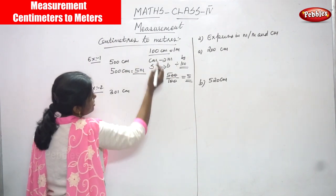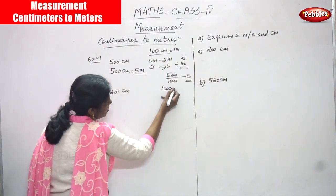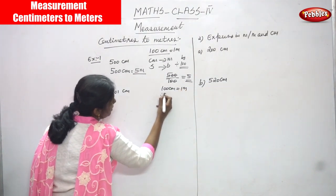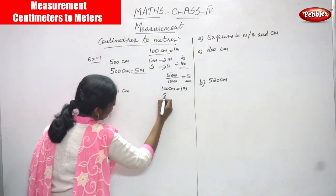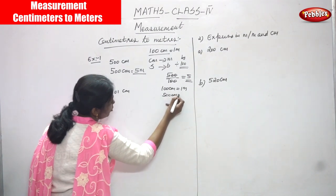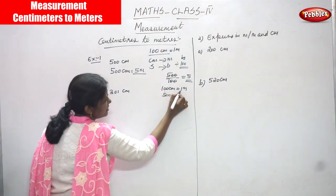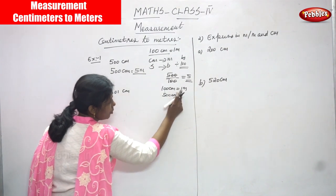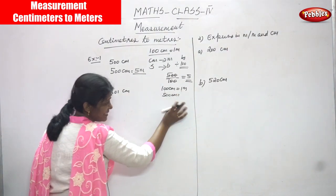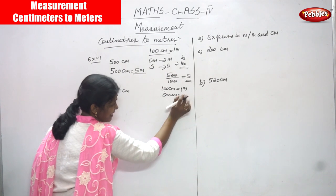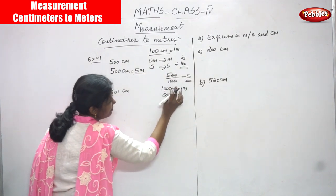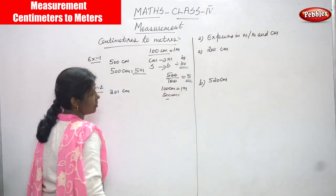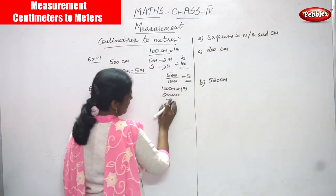Because 100 centimeters is equal to 1 meter, therefore 500 centimeters means 100 centimeter gives you 1, so 500 means 1 into 5. You can just cancel the zeros — because 500 divided by 100, you just cancel these two zeros with these two zeros.